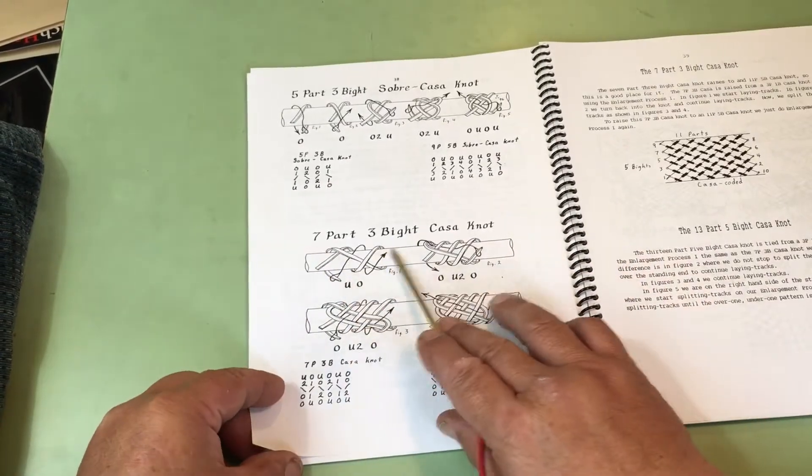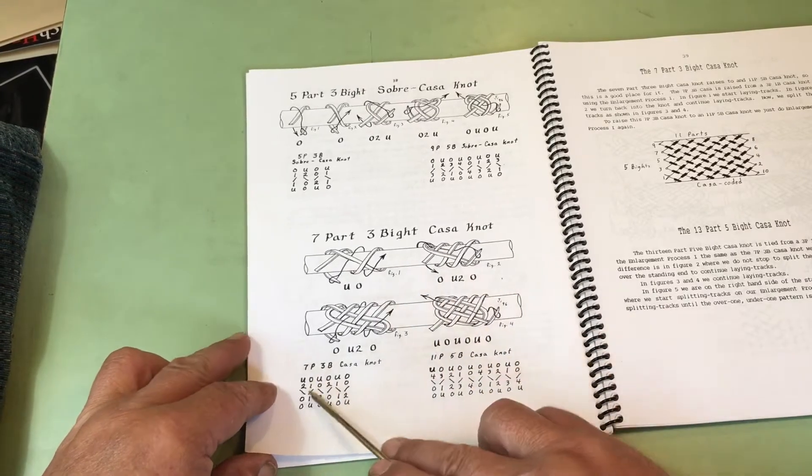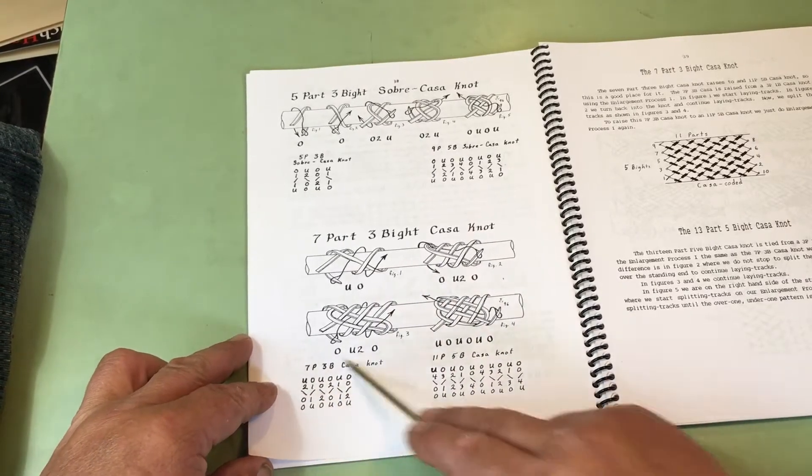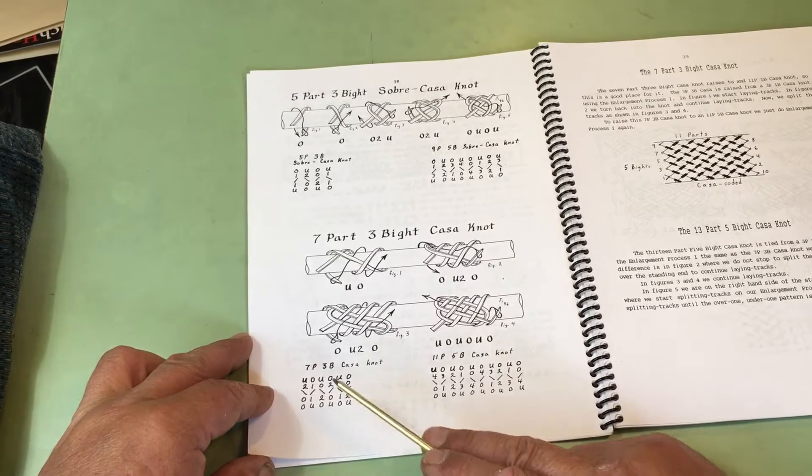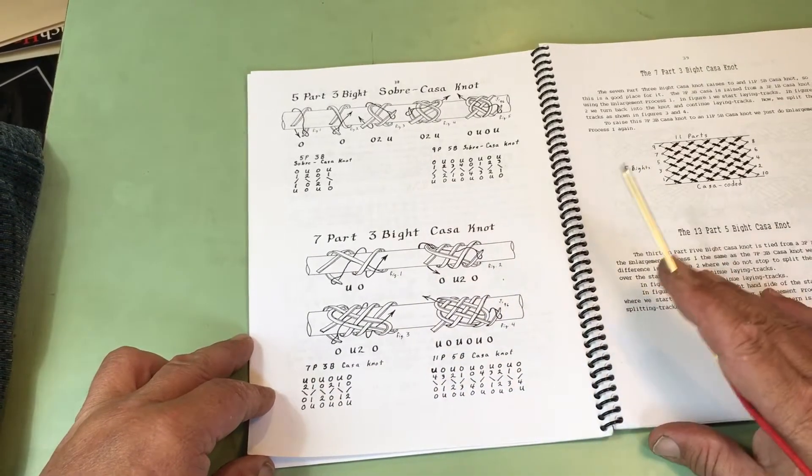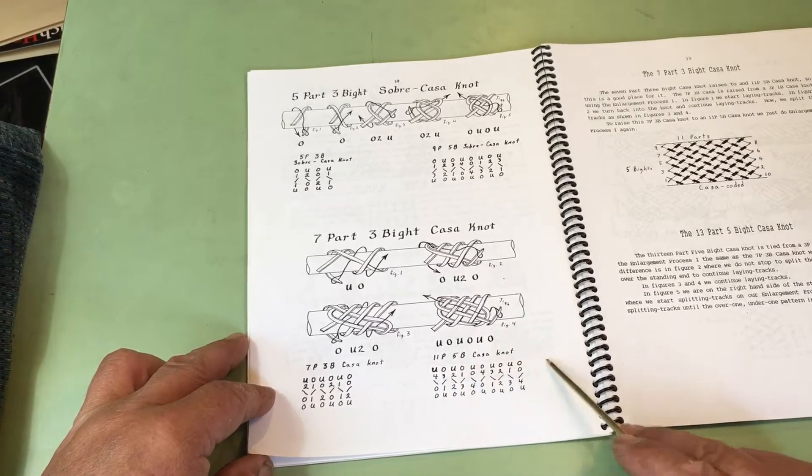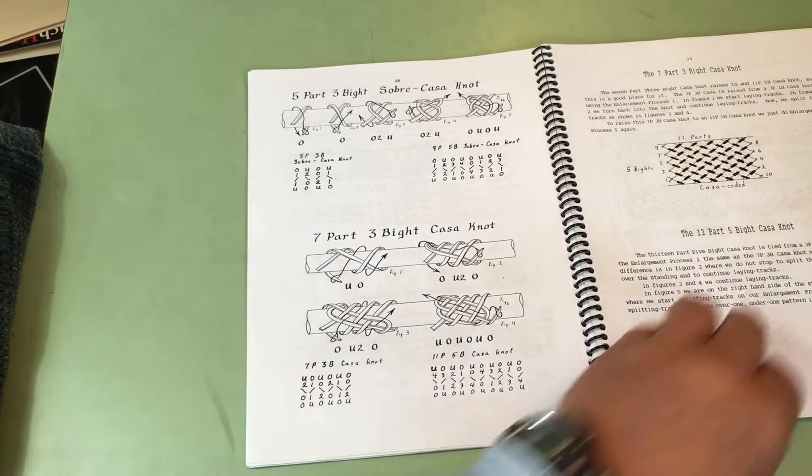On a seven-part, three-bight Sobre Casa Knot, here is the drawing for the seven-part, three-bight Sobre Casa Knot, it's a regular. There's the algorithm. If you use the enlargement process, the next knot would be an 11-part, five-bight, and there is the algorithm drawn out on it.